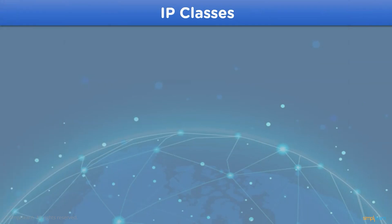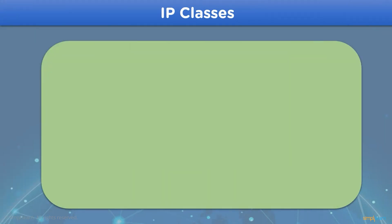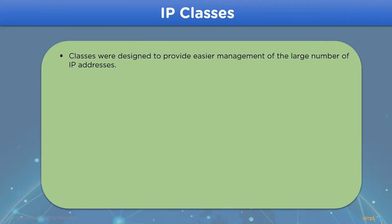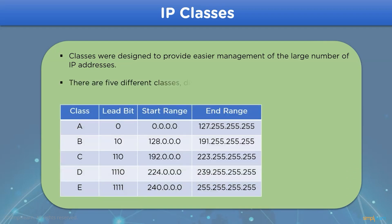Now let's move on to the next topic, that is IP classes. IP classes are designed to allow easy and efficient assignment of IP addresses to a network. Depending on class size, we have 5 different IP classes in a network, that are named as A, B, C, and D.